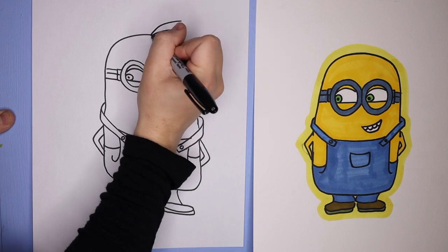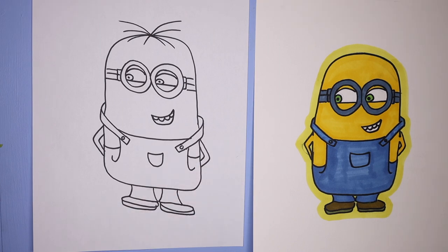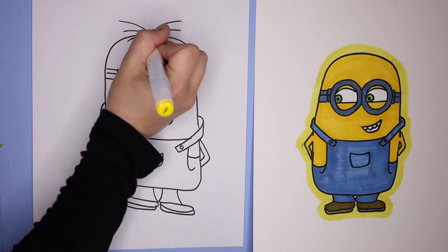And then for this minion, I decided to add some little hairs. So you can do whatever you'd like. I almost added a bow tie but decided to just go with the little hair pieces.